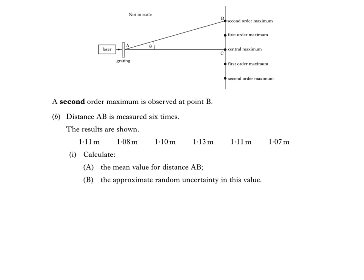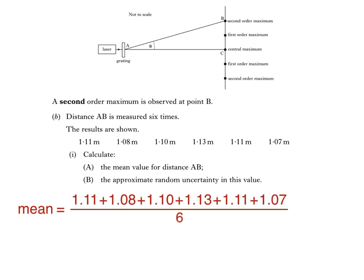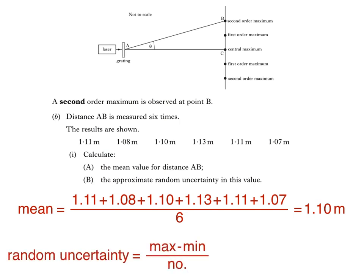To find the mean value, we just add all the values of distance together, then divide by the number of readings, giving us 1.10 metres. The random uncertainty is calculated using this equation — a shortened version of the one found in the relationship sheet. Random uncertainty equals the maximum value from the list of results minus the minimum value, divided by the number of values. This gives us 1.13 minus 1.07 divided by 6, which works out to be 0.01 metres.